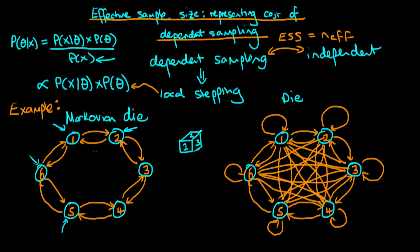For the Markovian die, the arrows in the state diagram all have exactly the same probability — a probability of one half. It's easy to show that for both of these examples the expected value of throwing either die is just three and a half.